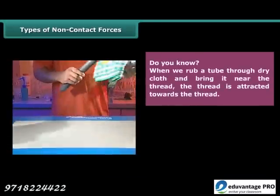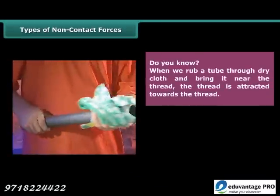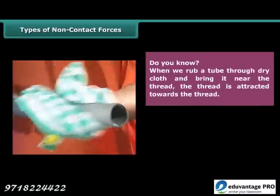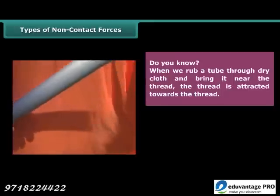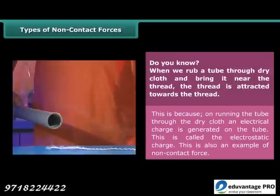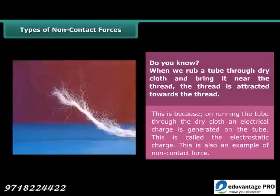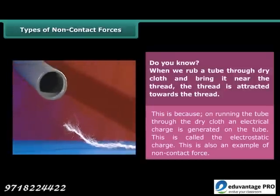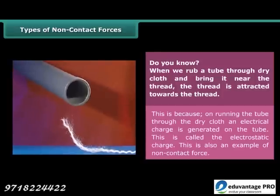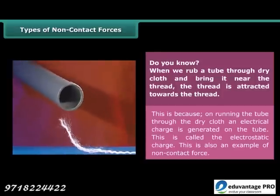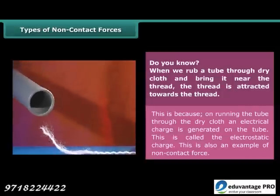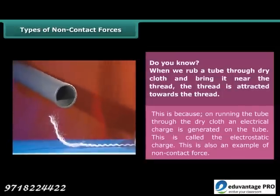When we rub a tube through dry cloth and bring it near a thread, the thread is attracted towards the tube. This is because on rubbing the tube through the dry cloth an electrical charge is generated on the tube. This is called the electrostatic charge, and this is also an example of a non-contact force.